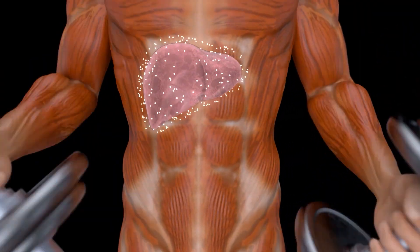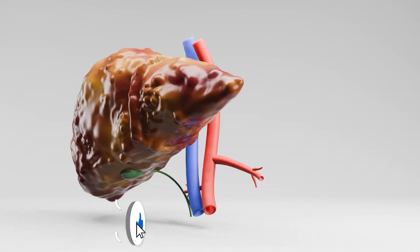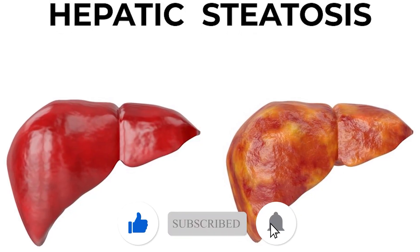But when things start to go off track, fat can begin to accumulate in the liver, and that's when fatty liver disease, or hepatic steatosis, can develop.